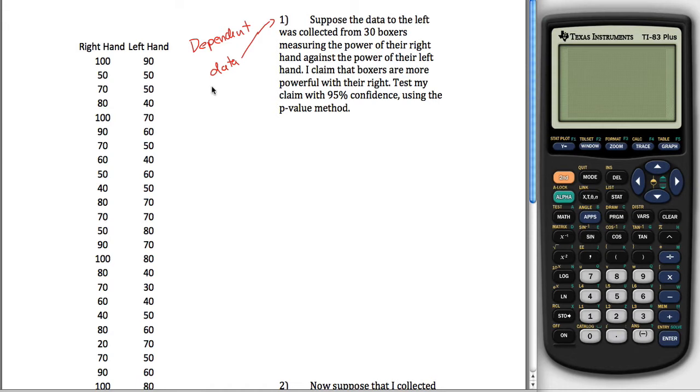We have dependent data. So what you do with dependent data is really you don't want to do two-sample testing. You want to do one-sample testing. And the way you do one-sample testing is by making a third column. Create a right-minus-left column, and then test that.